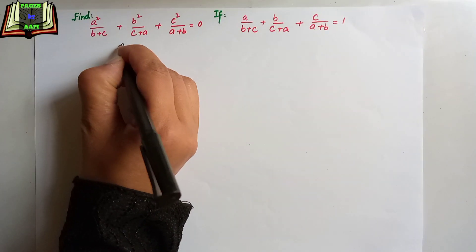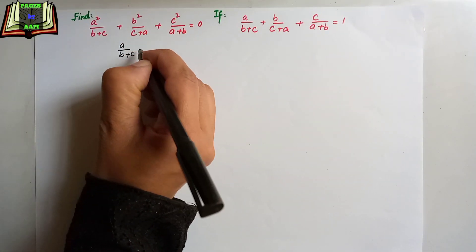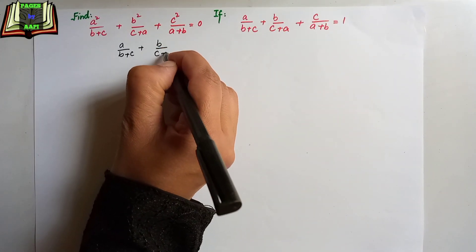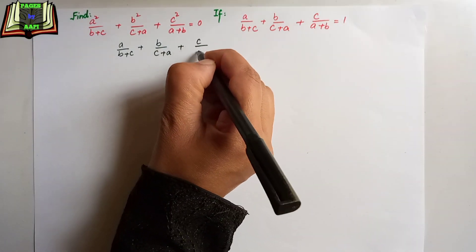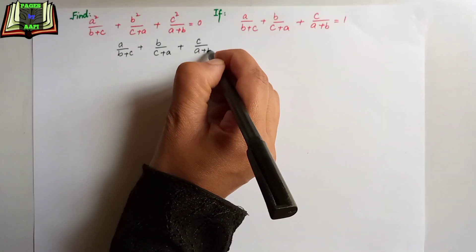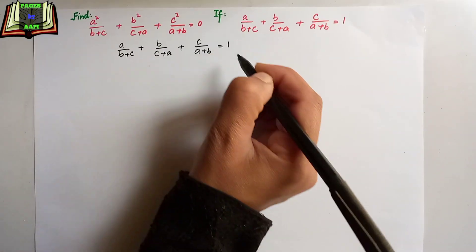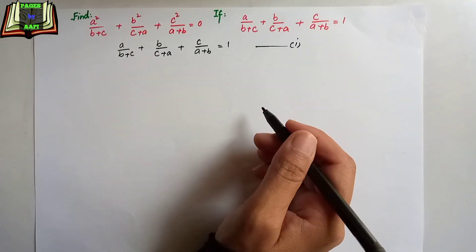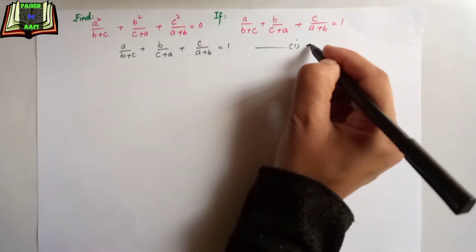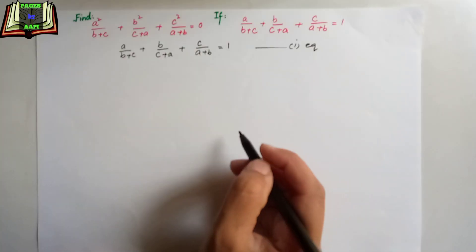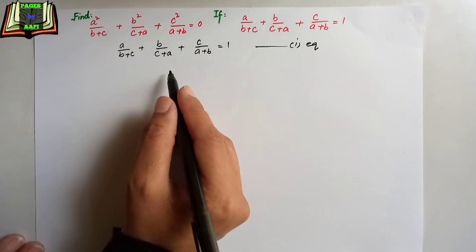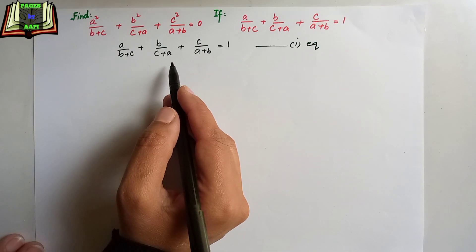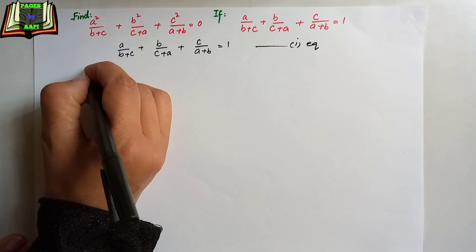We are going to manipulate the second equation which is given and then prove the first equation. Let's name this equation 1. As we want the required answer in a², b², c² form.